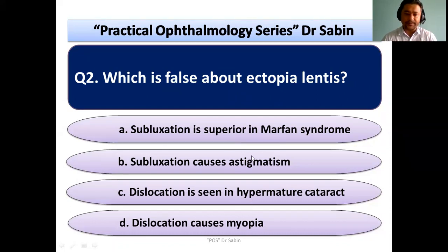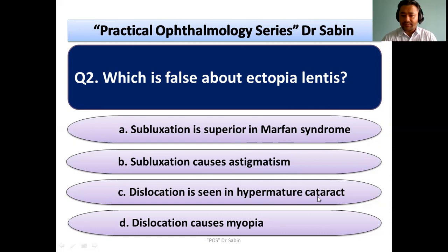Option A: subluxation is superior in Marfan syndrome — yes, it is true. Marfan syndrome subluxation is superior temporal. Option B: subluxation causes astigmatism — yes, it is true, because of lens tilt there will be astigmatism. Option C: dislocation is seen in hypermature cataract — yes, that is also true; subluxation and dislocation are common complications of hypermature cataract.